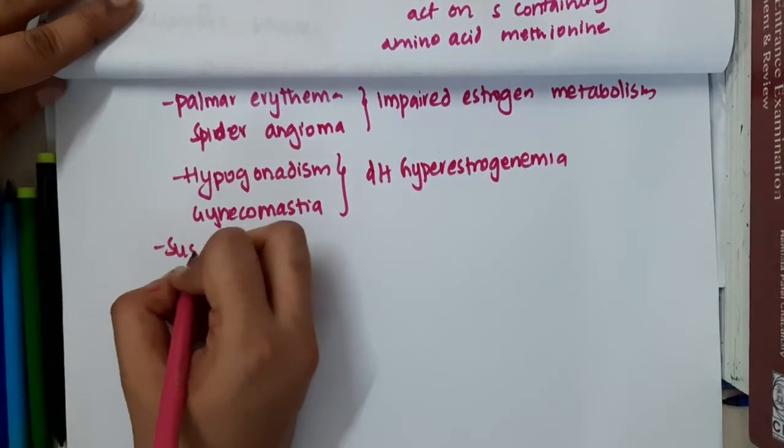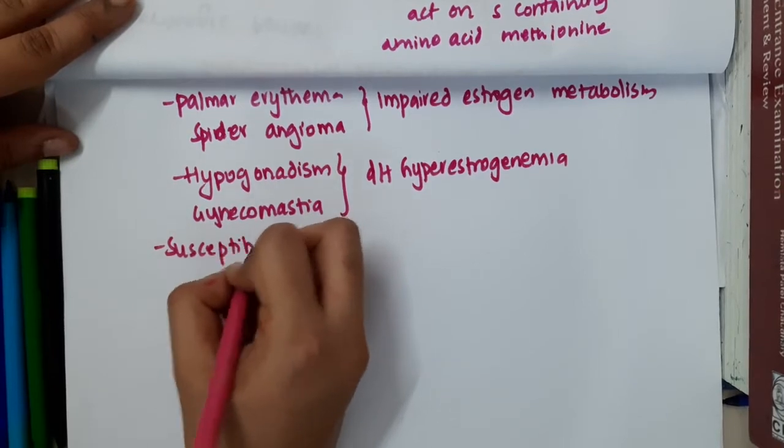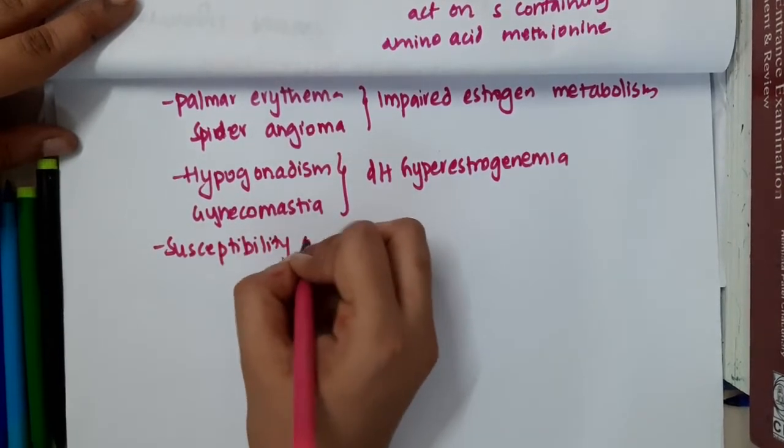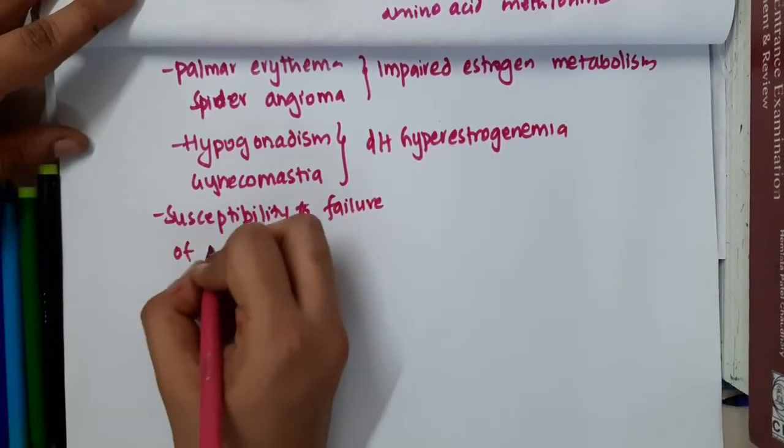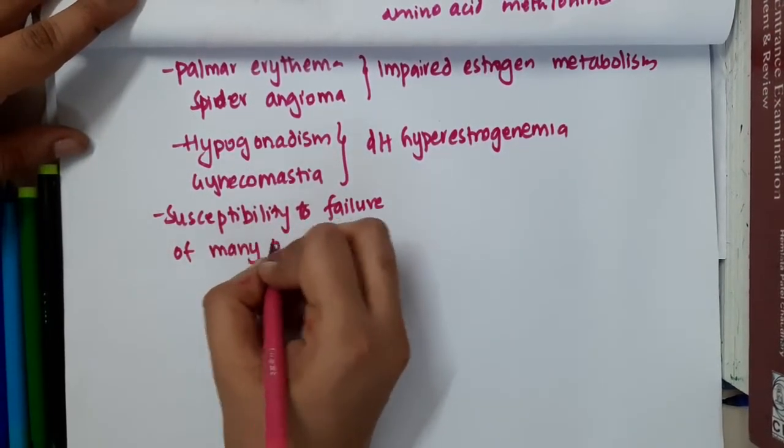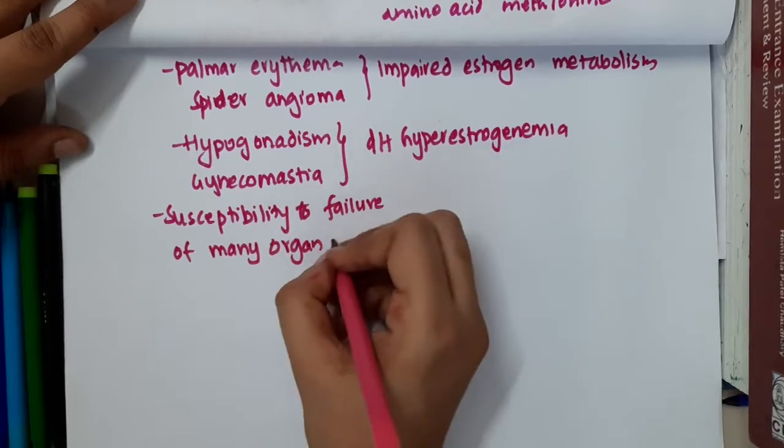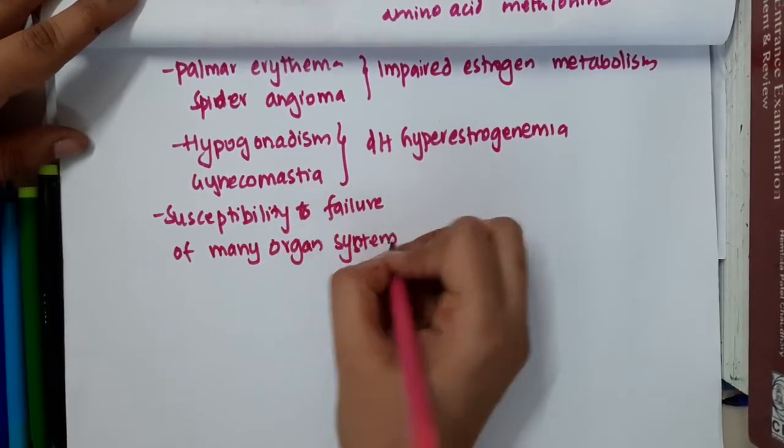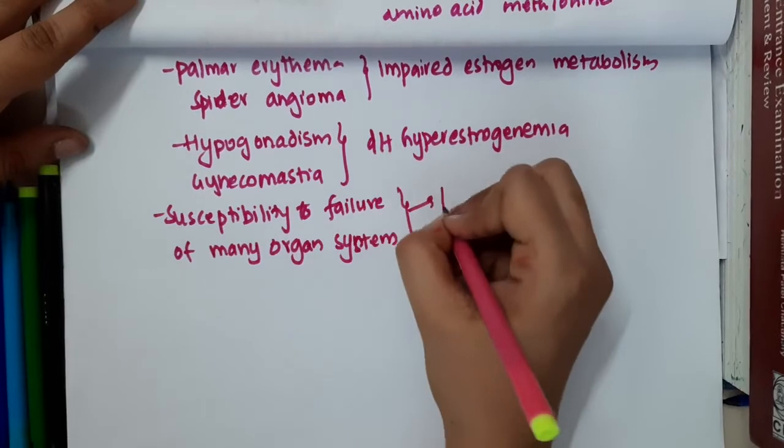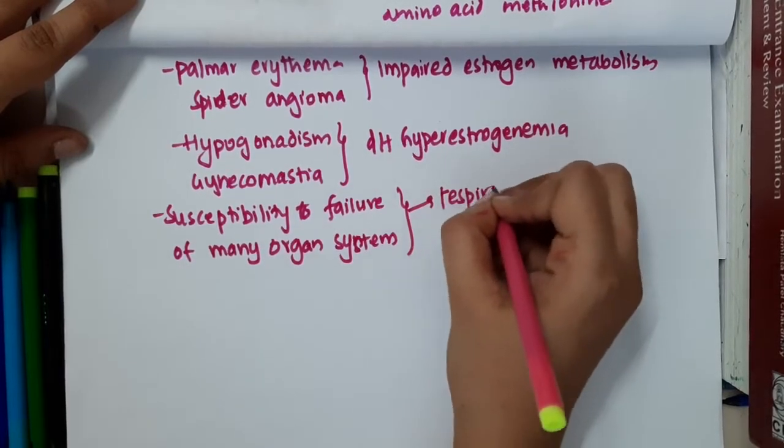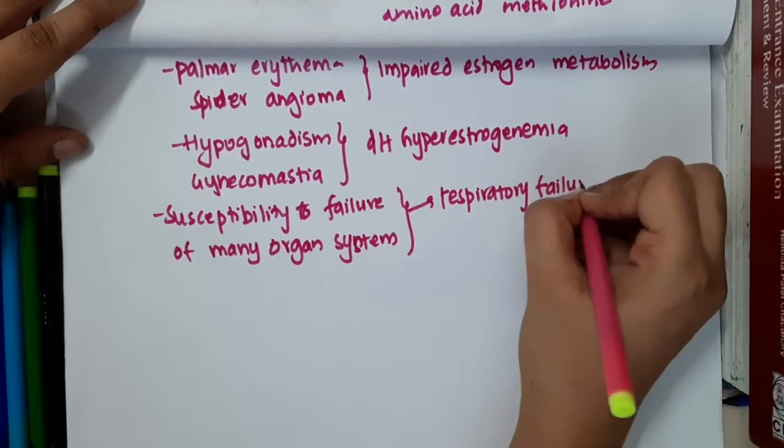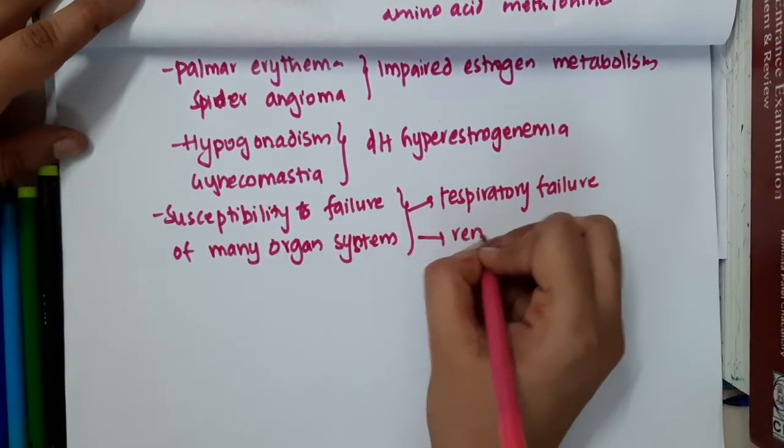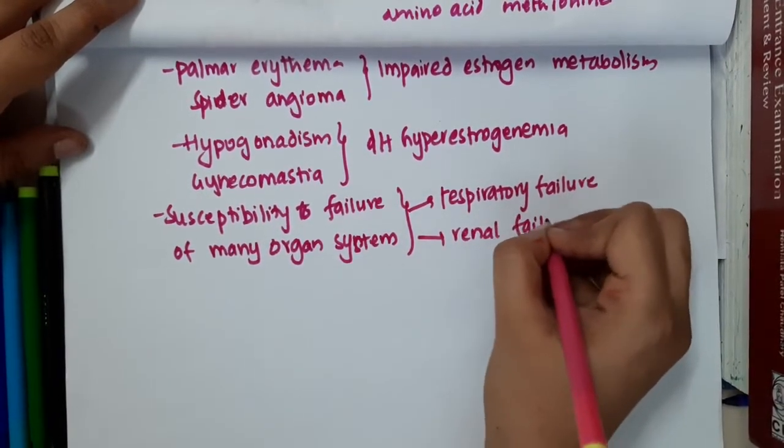Then there will be susceptibility to failure of many organ systems will also occur. Not just due to liver failure, the other organ systems can also fail. Like for example, there can be respiratory failure along with the liver failure, and second, there can also be renal failure along with the hepatic failure.